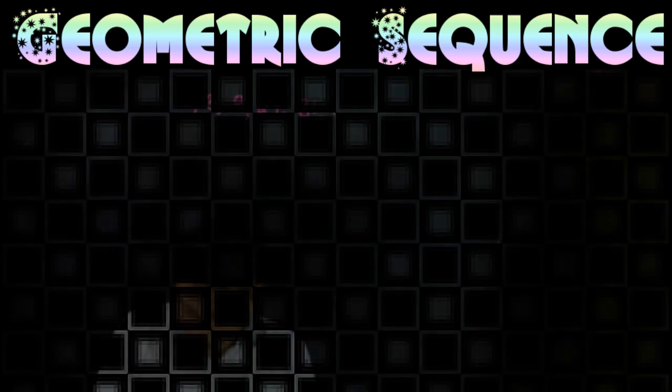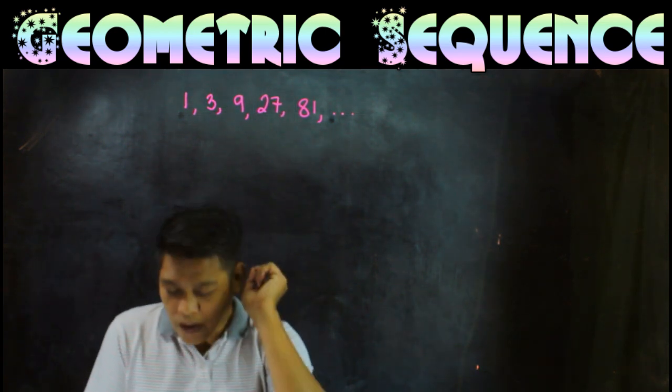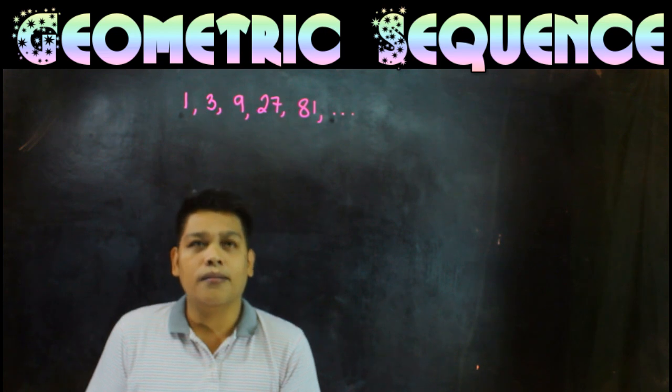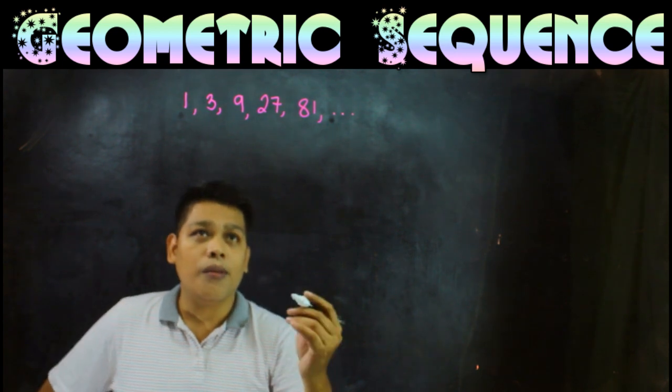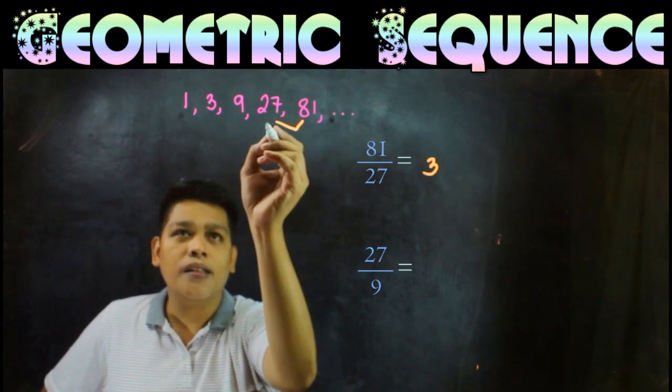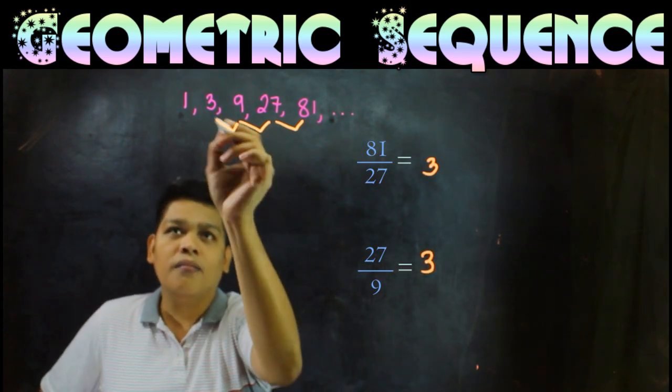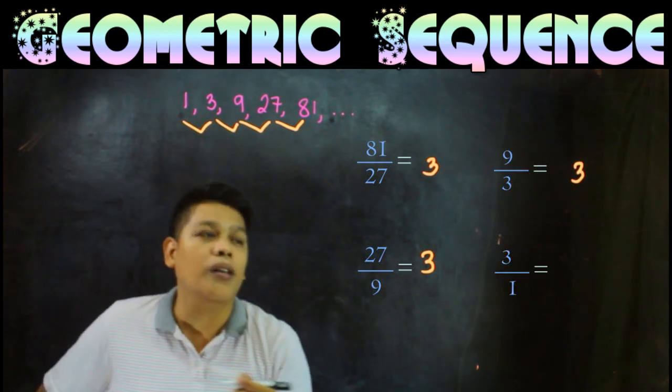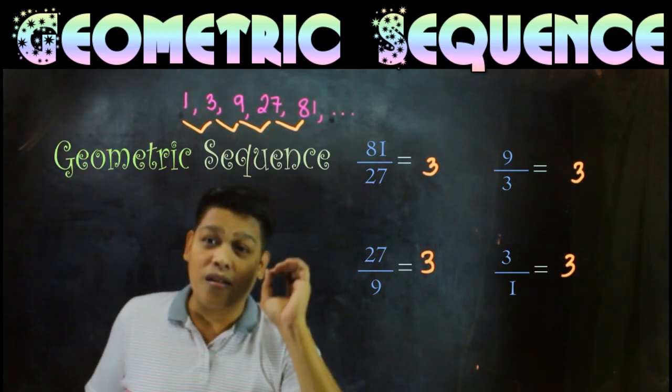Look at this example. Determine if the given sequence is geometric or not, and if it is geometric, find the common ratio. Let's look at number 1. Term number 5, 81, divided by term number 4, 27, is 3. When we divide 27 by 9, this is 3. Now 9 divided by 3 is 3, and 3 divided by 1 is 3. This means this is a geometric sequence with common ratio 3.